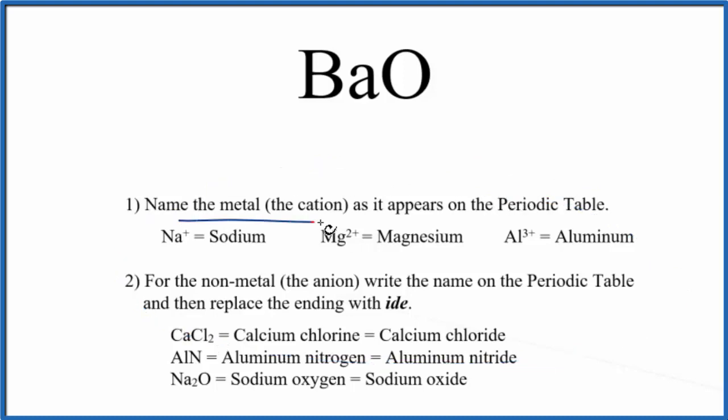We'll start out by writing the name of the metal as it appears on the periodic table. Ba, barium, that's the metal. So we write barium.